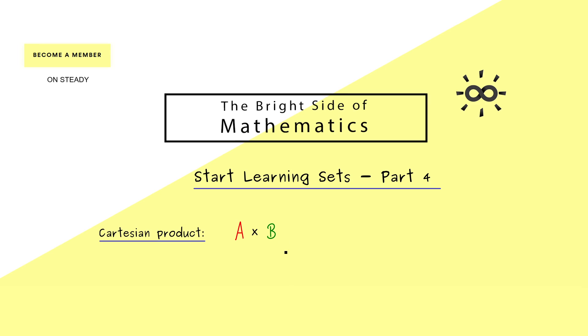So you see this is something new. Now we want that the order matters. Okay, before we write down the general definition, let's first look at an example. For A, I want a set consisting of three symbols, so let's take a triangle, a square, and a circle. And for B, let's take a set with two numbers, maybe 4 and 7.